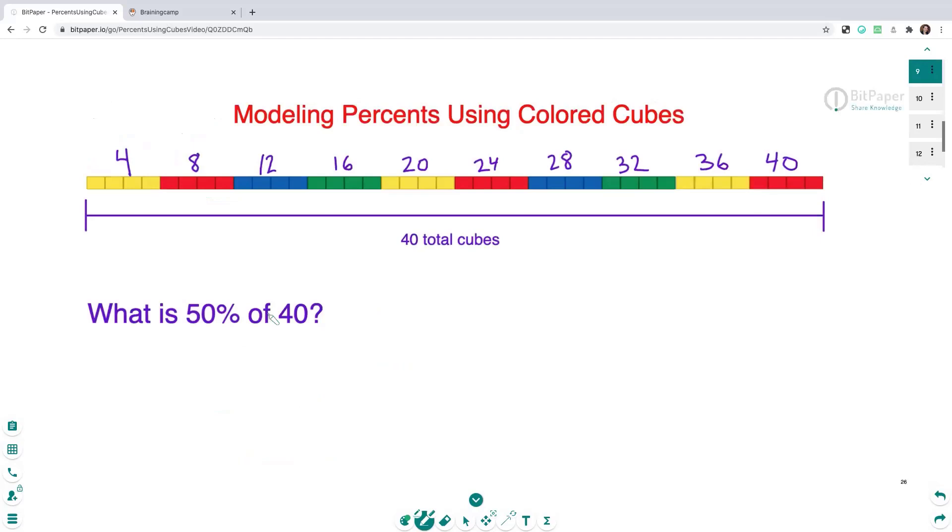And now we're jumping to 50% of 40. Okay, we can do this. 50% is the same as one half. And what is one half of 40? That's right, it's 20. So 50% or one half of 40 is 20. That would be right here in the middle of these cubes, right there.